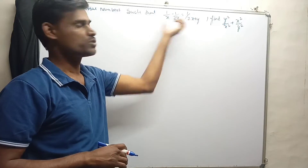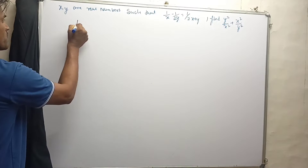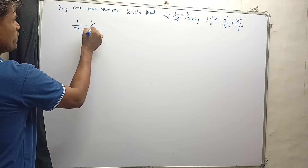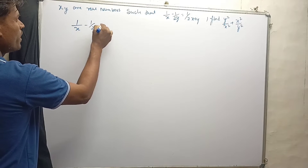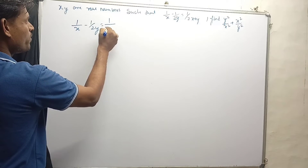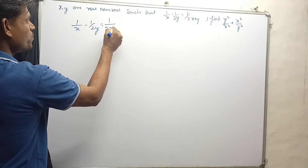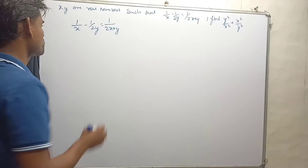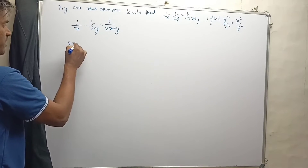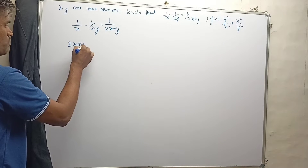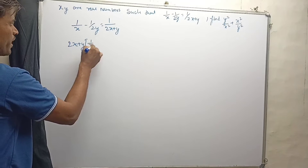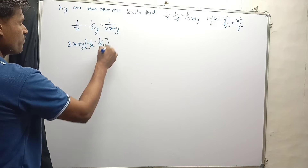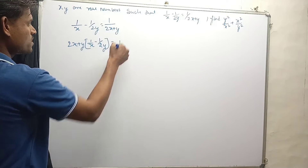Let's try to solve this one. First, I am going to write 1/x minus 1/(2y) equals 1/(2x + y). Let's go for cross multiplication. By doing cross multiplication, we can write (2x + y) times (1/x minus 1/(2y)) equals 1.